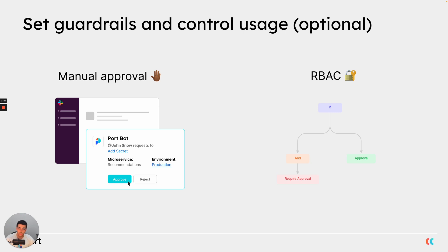There is also an optional step for setting up guardrails and control usage. You could configure that only certain users can trigger a specific action, and you can use manual approval to make sure that destructive, dangerous, or expensive actions must go through an additional approval step to ensure they really should be performed.